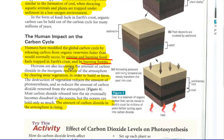Lastly here, if we look at the human impact on the carbon cycle, of course, humans have modified the global carbon cycle by releasing carbon from organic reservoirs faster than would normally occur. We're accessing those fossil fuels. So the mining and the burning of fossil fuels that are trapped, also burning forests, is releasing carbon back to the atmosphere much quickly.